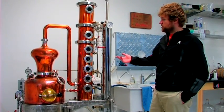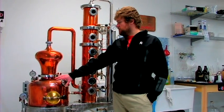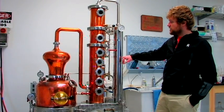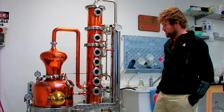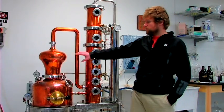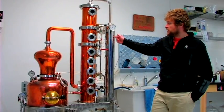They would use a still similar to this without this column right here. This is the pot of the still. This is the head. This is a column that's the condenser. A traditional Scotch style pot whiskey still will not have a column like this. It'll go directly from the pot to the head, and this pipe will come over directly to a condenser.